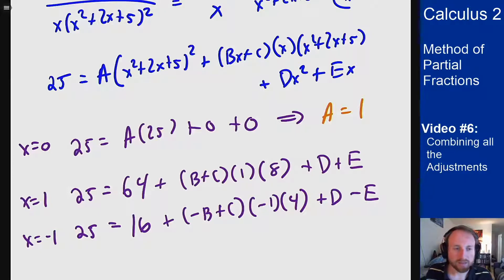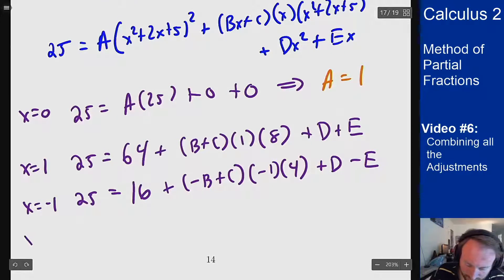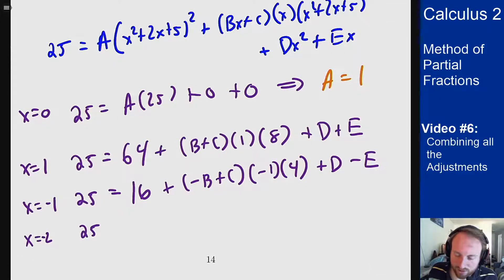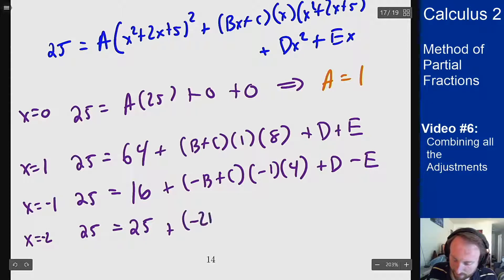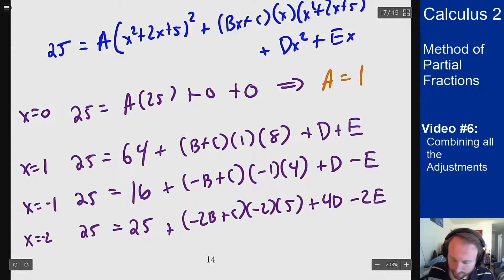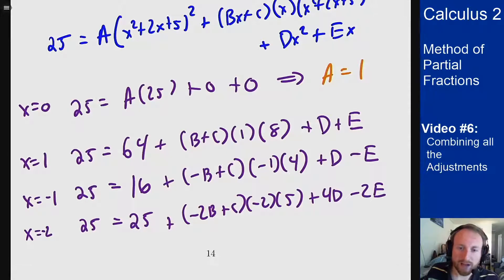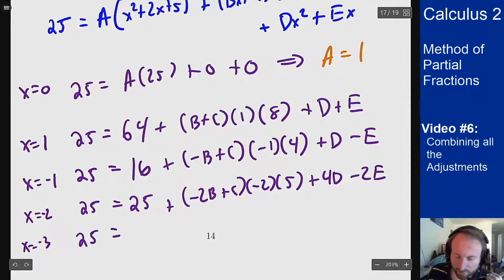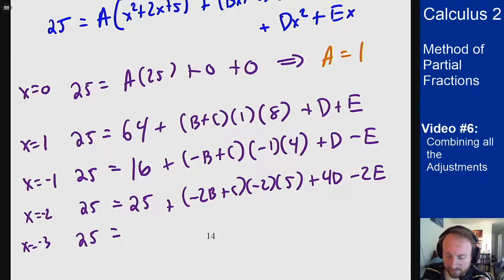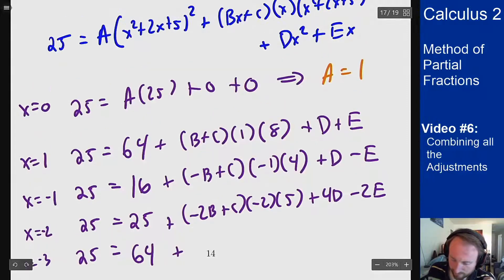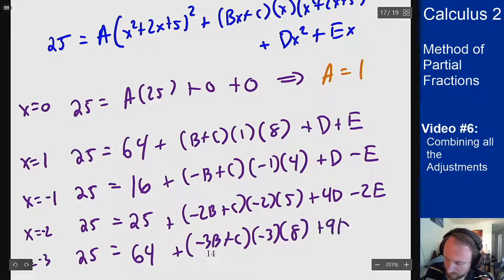Let's also plug in x = −2 and x = −3. For x = −2: 4 − 4 + 5 = 5, giving 25 = 1·25 + (−2B + C)·(−2)·5 + 4D − 2E. For x = −3: 9 − 6 + 5 = 8, giving 25 = 1·64 + (−3B + C)·(−3)·8 + 9D − 3E.